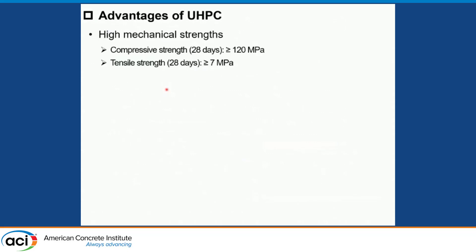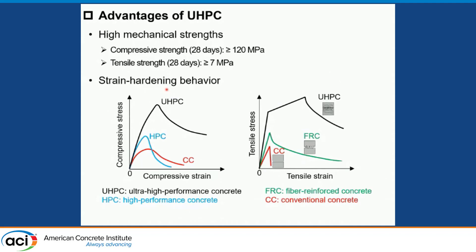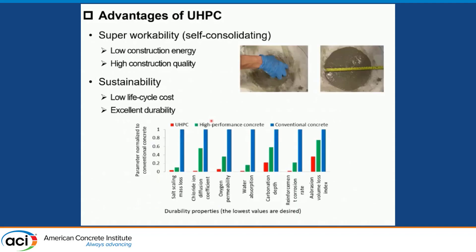In general, as other speakers introduced before, UHPC possesses high mechanical strength. The 28-day compressive strength is over 120 MPa and the 28-day tensile strength is over 8 MPa under sand curing. Particularly compared with high performance concrete and conventional concrete, UHPC shows strain hardening behavior after cracking. Besides, UHPC also has super workability, which requires pretty low construction energy to achieve very high construction quality. And most importantly, UHPC has exceptional durability, which benefits the reduction of life cycle cost. Because of that, UHPC has been applied to many civil infrastructures to extend service life.